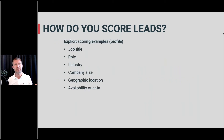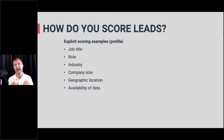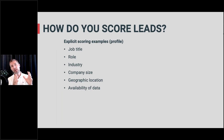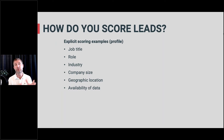Explicit scoring examples could be everything you have on the contact card in eMarketeer — titles, roles, industries, company size, location, country, or just the fact that you have data. The fact that you have a job title or a mobile phone on the contact card, you could assign points to that. Maybe you want to contact people in Sweden that work in marketing, so you'd look at country as a geographic location and score on that, or look at their job title to find marketing titles.